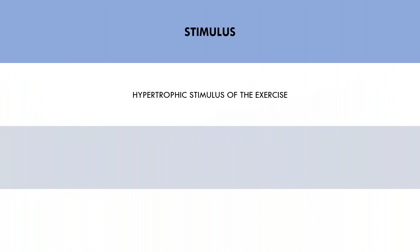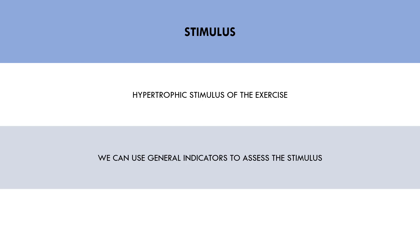The stimulus side of the equation refers to how well the exercise stimulates muscle growth. This is not quantifiable, but we can use indirect indicators to assess the hypertrophic stimulus. These indicators aren't direct measures of the hypertrophic stimulus; they are just factors that can probably tell us that the exercise we are using is effective at training the muscle we want to target.